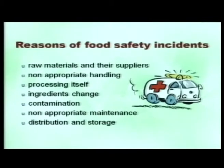Sometimes the processing itself results in food safety incidents. For example, if an additive is added above the prescribed level, it may lead to problems. If in the processing we do not use the correct combination of time and temperature, it may lead to a problem. There are changes in ingredients — sometimes we forget and do not follow the right ingredients, which may result in food safety incidents.